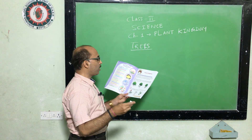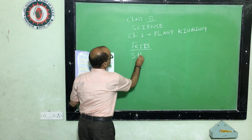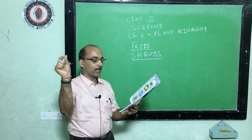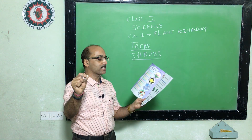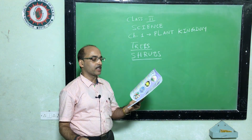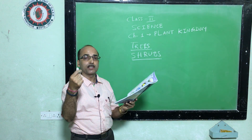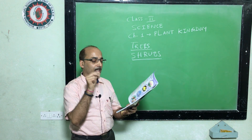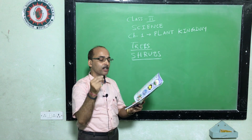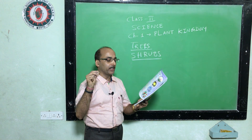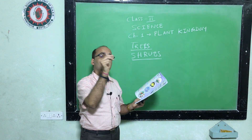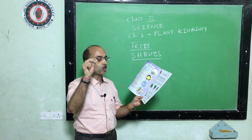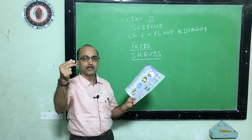Next we will read about shrubs. What are shrubs? Shrubs are small plants. They have a hard and thin stem with many branches. The difference between trees and shrubs: a tree has a hard and strong stem, but a shrub's stem is thin and hard with many branches. Most of them live for a few years. Examples: rose plant, cotton plant, and henna plant — henna, you know it as mehendi, which gives color.